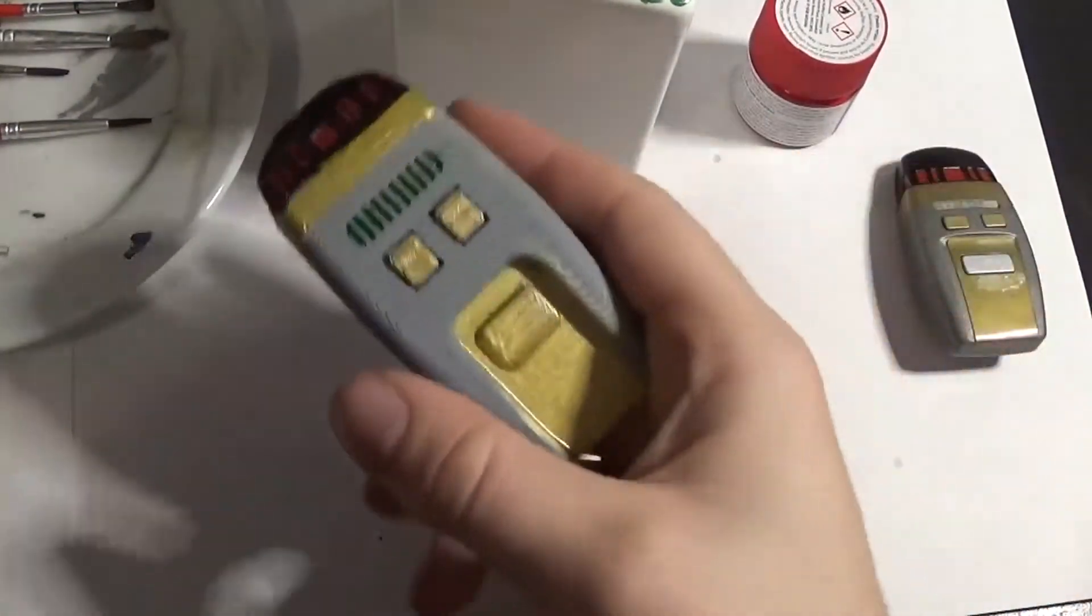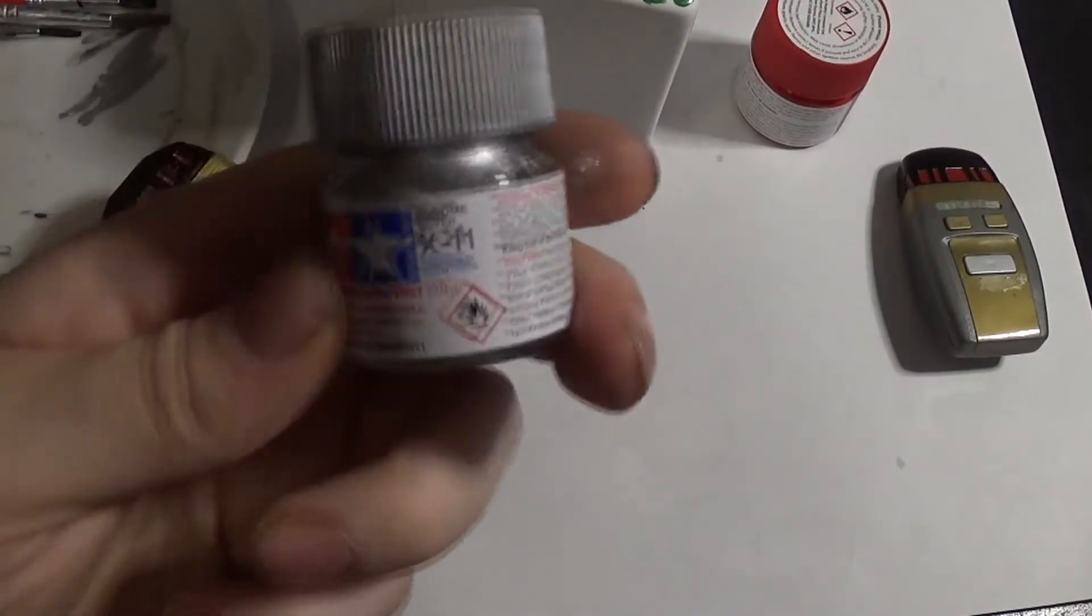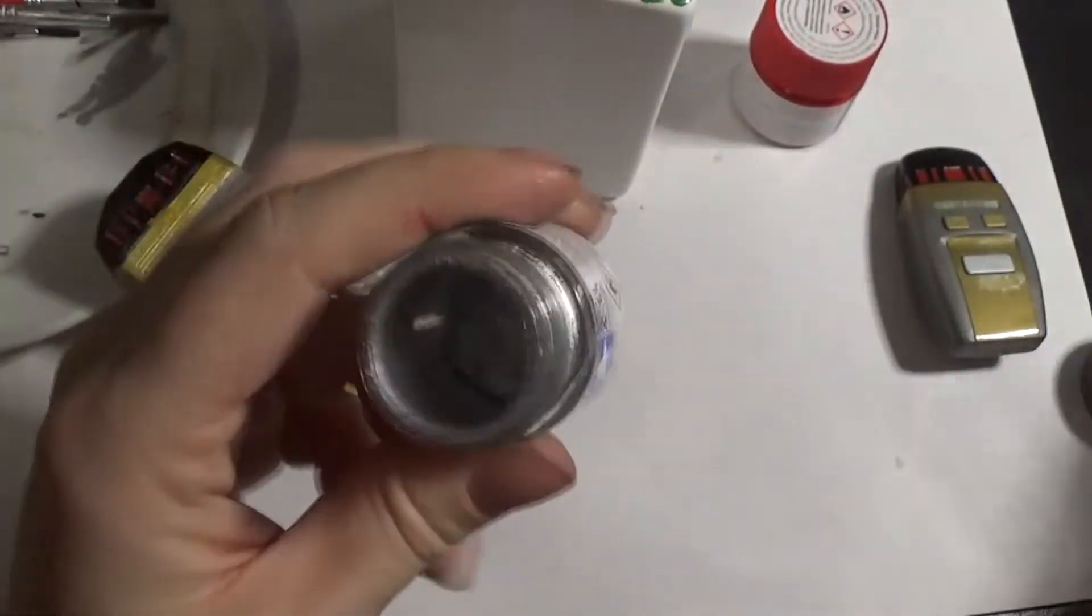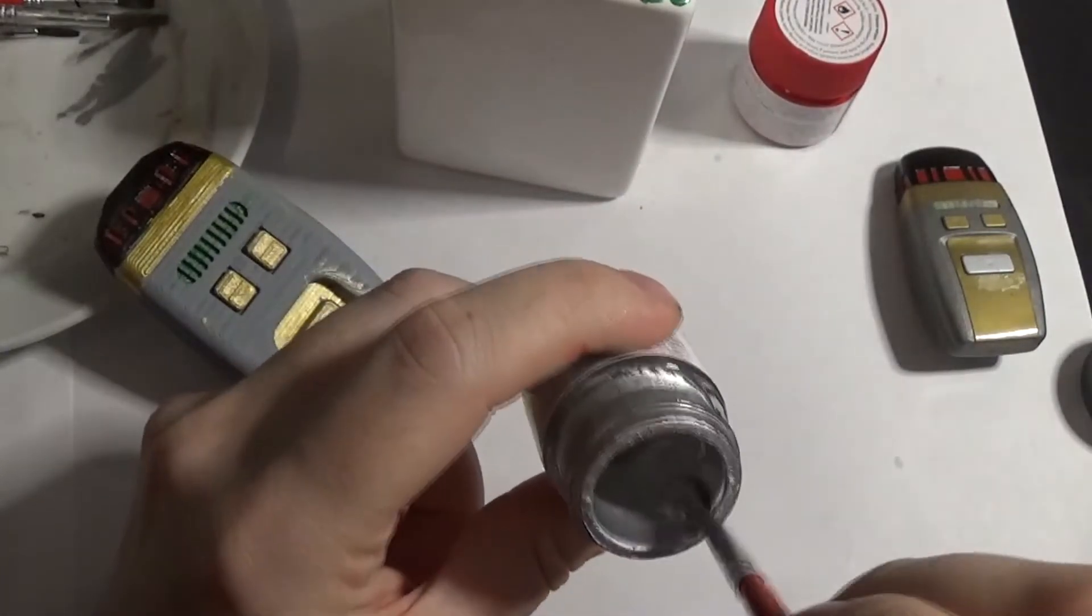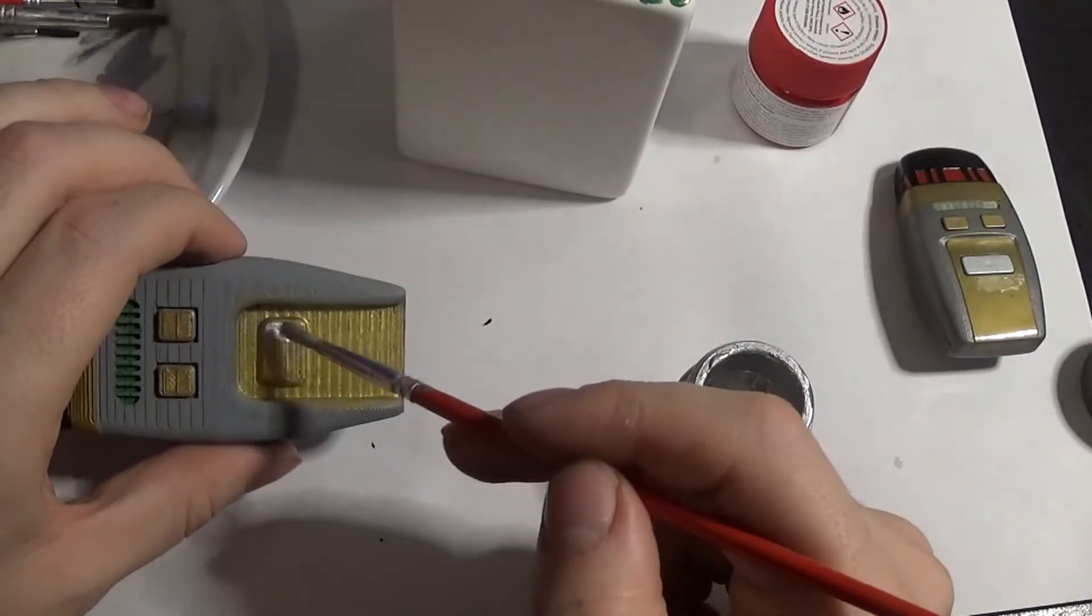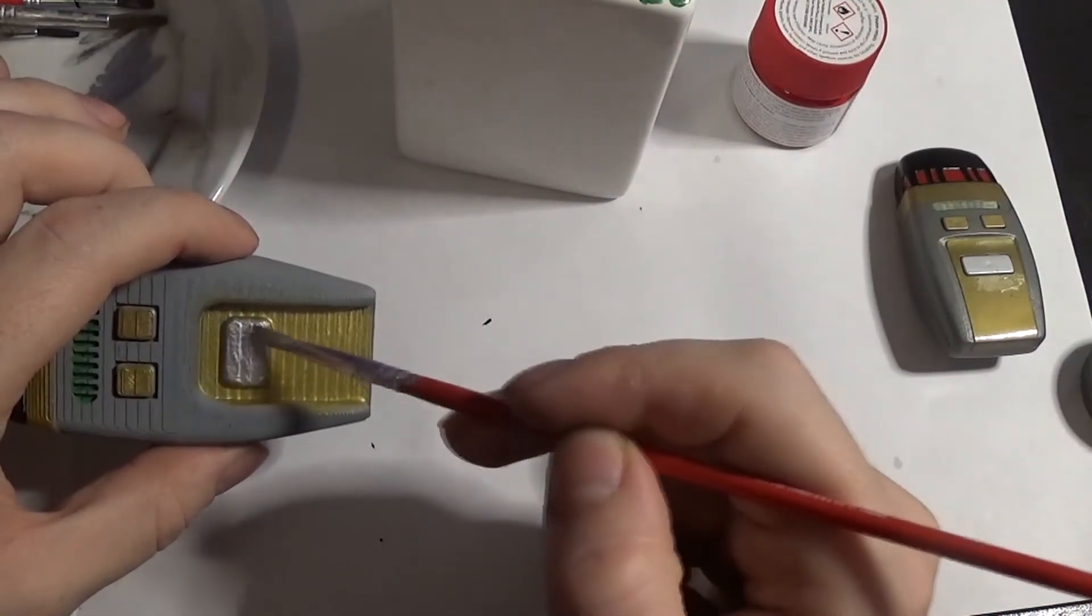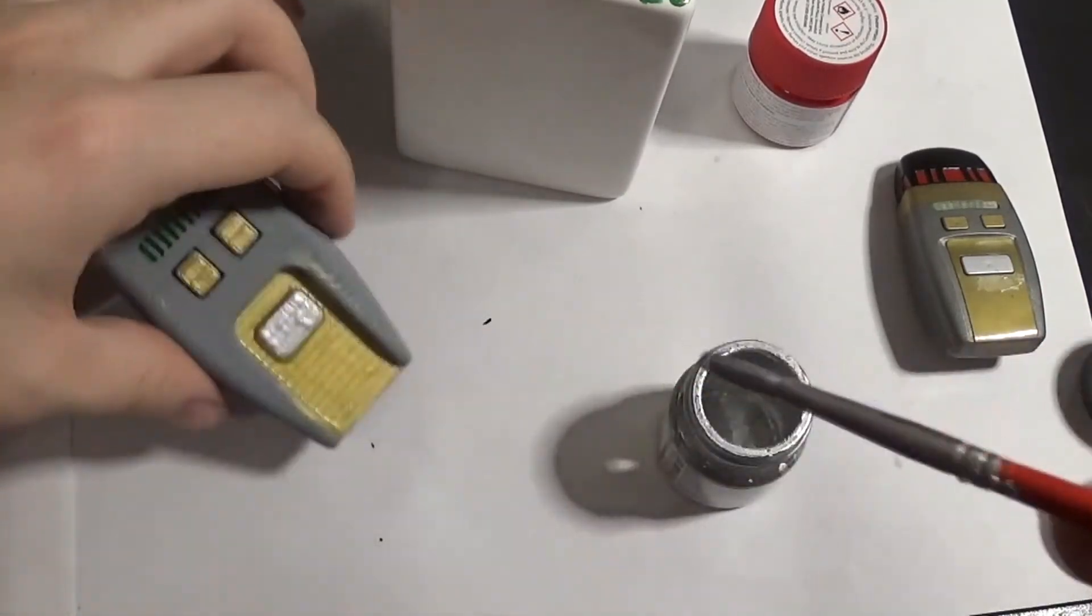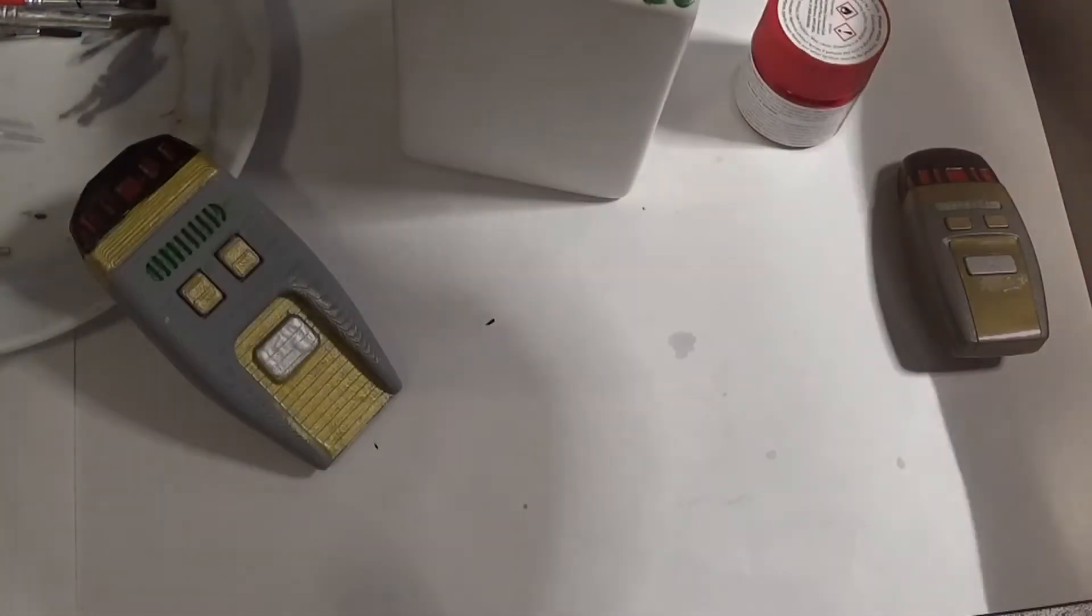So that gold is now nice and dry. So I'm bringing out another paint. This is X11 Chrome Silver. I'd actually use this on my phaser rifle so the paint pot is absolutely empty. The entire pot used on a phaser rifle. You can see pictures of that on my Facebook page. Link in the description. Always wash your brushes. Make sure they're nice and clean.